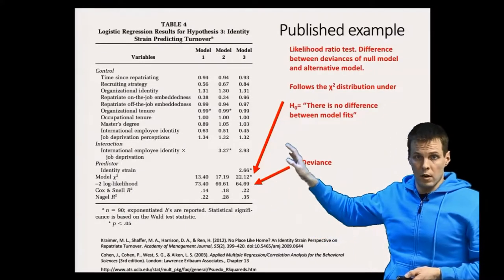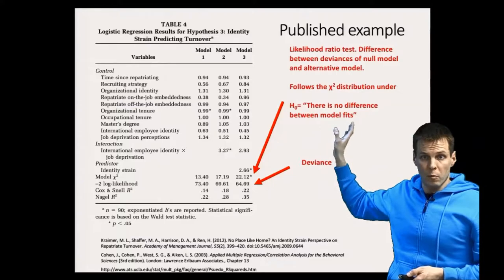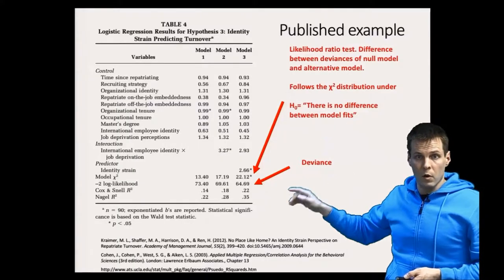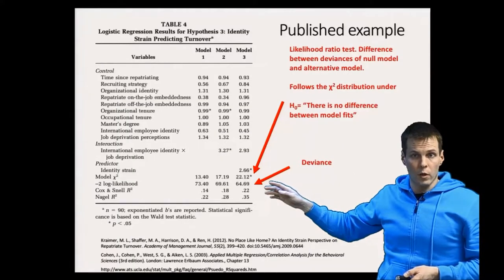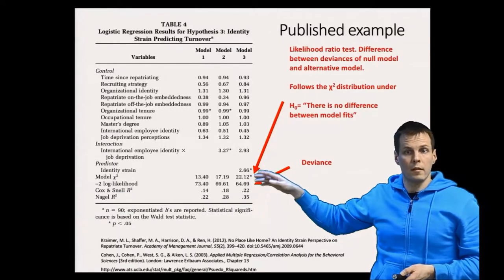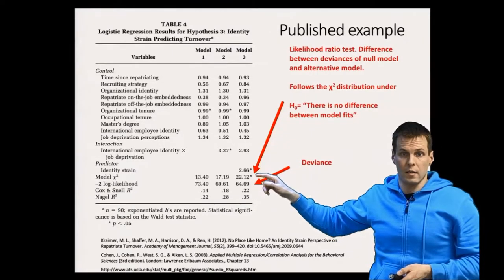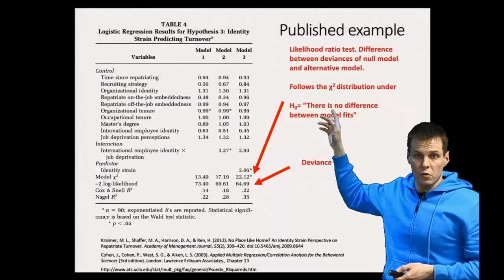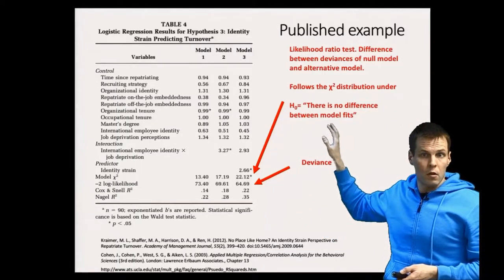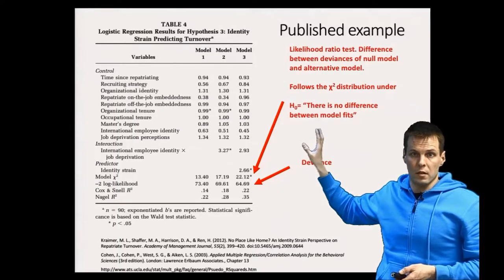So the hypothesis here is that there is no difference between model fit of this model and the model with only an intercept, and the test is calculated by checking what's the difference between deviances and that follows the chi-square distribution when the null hypothesis holds and when the sample size is large.